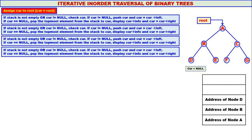Now, stack is not empty or curry not equal to null — curry is equal to null but stack is not empty, so one condition is true. If curry is equal to null, pop the topmost element from the stack to curry. Address of node D is popped to curry. Display curry info — D is displayed. Curry moves to curry's right. There is no right child for D, so curry becomes null.